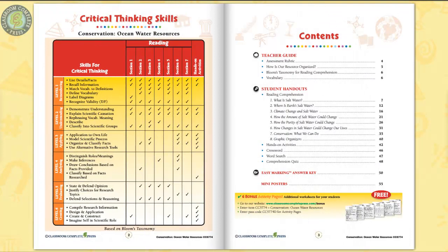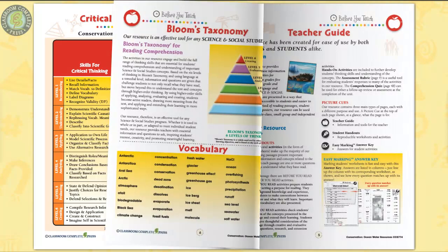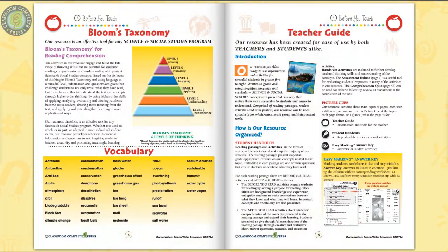Our resource explores the importance of conserving this vast area. Aligned to STEAM and next-generation science standards, this resource is 60 pages of content within 7 chapters, full of vocabulary, comprehension, and hands-on activities. We also include an assessment rubric, a critical thinking skills rubric, and a vocabulary list.